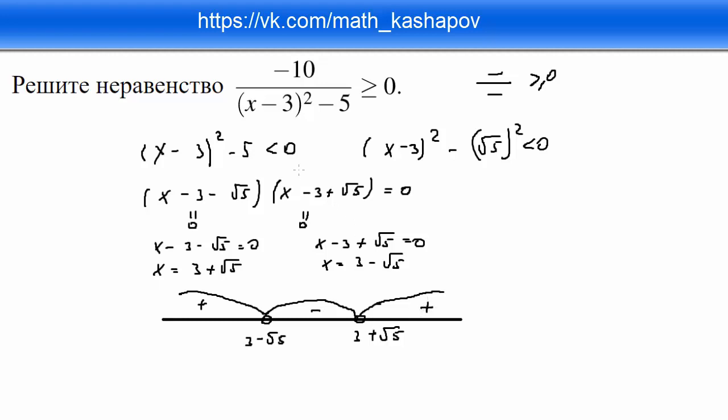А нам нужно, чтобы x минус 3 в квадрате минус 5 должно быть меньше нуля. А меньше нуля оно как раз от 3 минус корень из 5 до 3 плюс корень из 5.